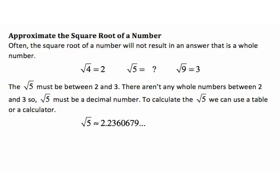Approximate the square root of a number. The square roots in the last examples were perfect squares — their square roots are whole numbers. But often the square root of a number will not be a whole number. For example, the square root of 5 must be between the square root of 4 (which is 2) and the square root of 9 (which is 3). Since there are no whole numbers between 2 and 3, the square root of 5 must be a decimal. To calculate these, we use a table or a calculator.